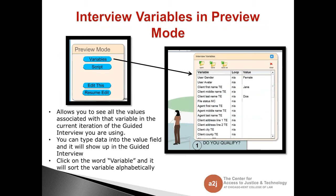Another helpful feature is the interview variables tab in preview mode. In the bottom left-hand corner is the preview mode box with four buttons. Clicking the first button, variables, opens a screen on the right-hand side showing all the variables being used in your guided interview. A cool thing is that if you're halfway through the interview, it shows you what values have been entered — for example, that the end user selected female as the gender and their name is Jane Doe. You can edit values directly by clicking on them. You can also sort variables alphabetically, either A to Z or Z to A, which is helpful when scrolling through a large list.